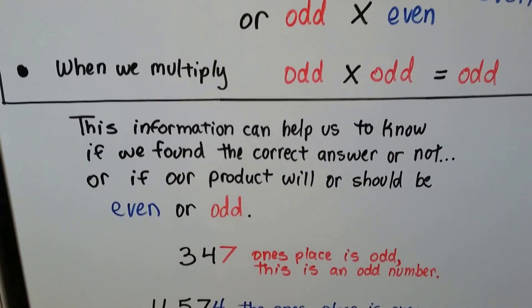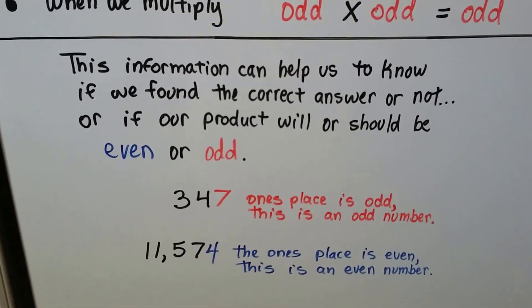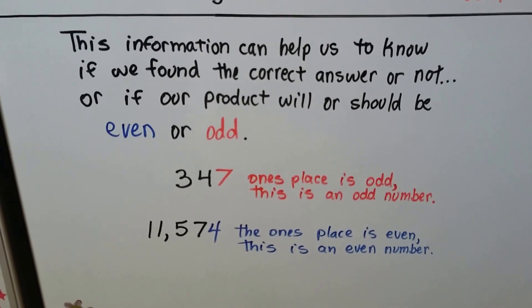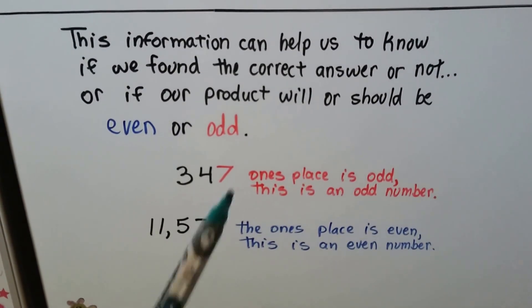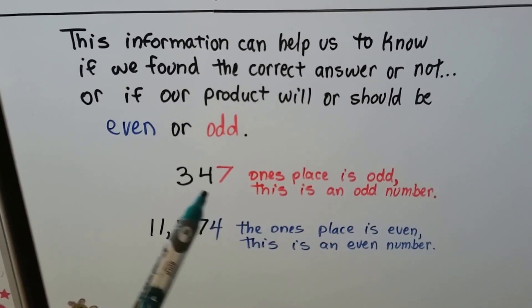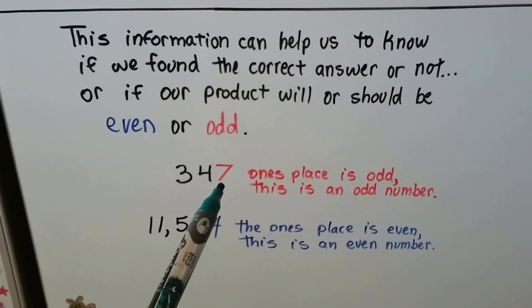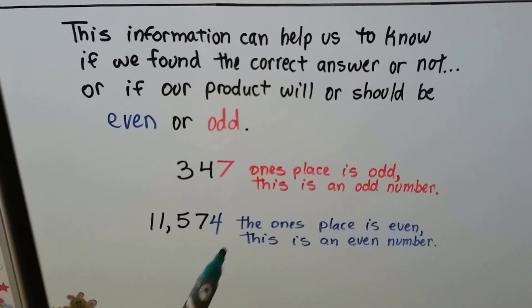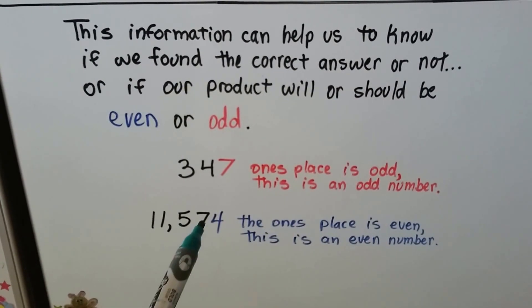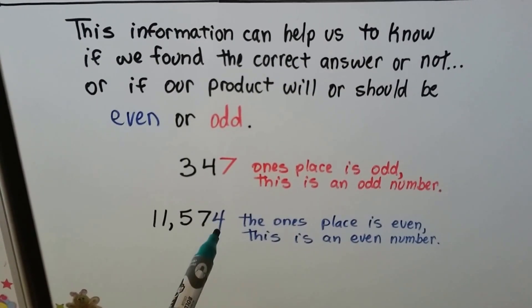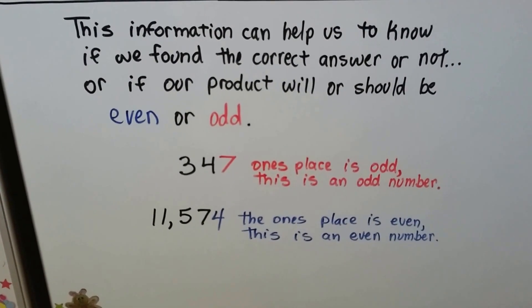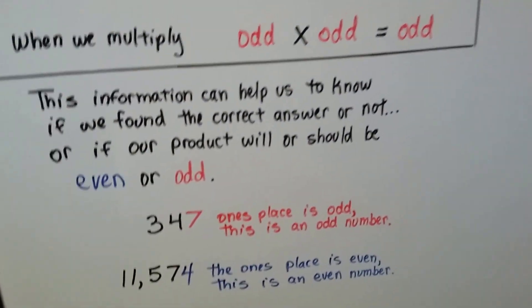This information can help us to know if we found the correct answer or not, or if our product will or should be even or odd. You know it's an even or odd number by the ones place. 347 is an odd number because seven is odd in the ones place. We know 11,574 is even because the four in the ones place is even. It doesn't matter how big it is.